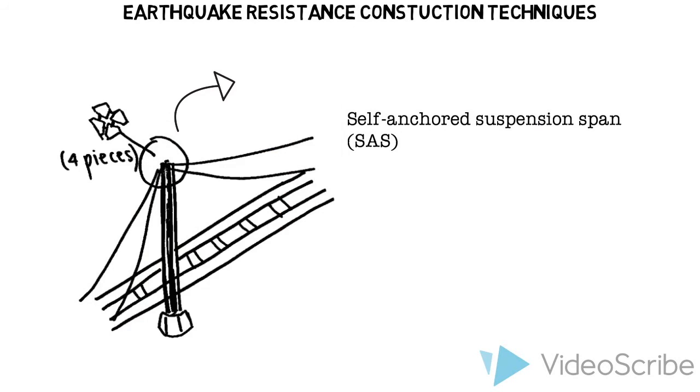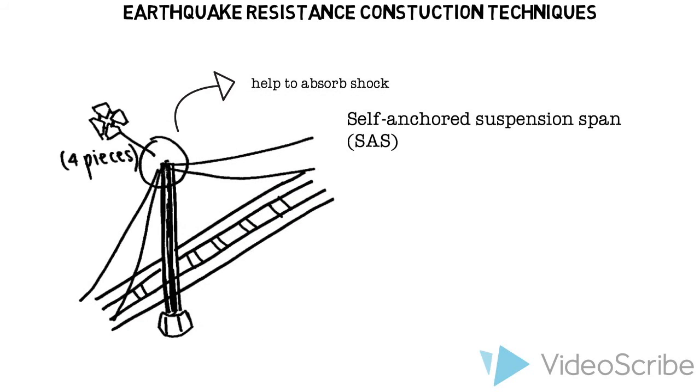Main towers are in four pieces connected by shear links, designed to absorb shock. Single cables take the strain to keep the structure balanced.